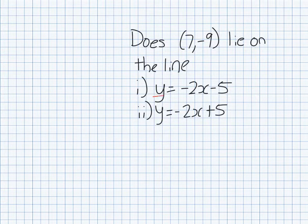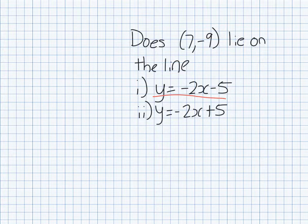So remember the line y equals minus 2x minus 5, the points that lie on that line are the values of x and y that satisfy the equation. So to determine whether or not 7 minus 9 lies on this line, we're just going to substitute x for 7, y for minus 9 and see if we get a true statement.